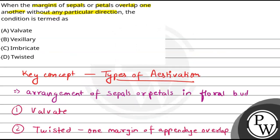Now, according to the question, the margins of sepals and petals overlap without any particular direction — that corresponds to imbricate aestivation. So the correct answer is imbricate. Best of luck, thank you.